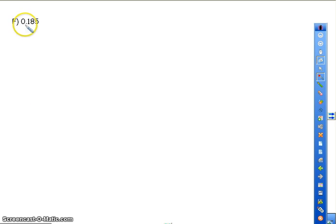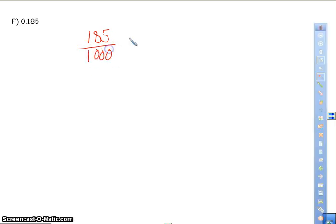And then I have the next one. This is 0.185, but this means it's 185 thousandths. So I need to simplify this. If it ends in a 5 and a 0, I know 5 can go into it. 5 goes into 185 thirty-seven times. 5 goes into 1,000 two hundred times. I can't simplify 37 and 200 anymore. So that is my answer.